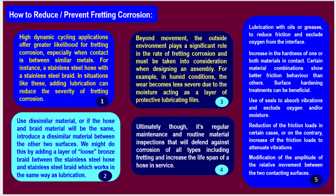Specific prevention methods include: lubrication with oils or greases to reduce friction and exclude oxygen from the interface; increasing the hardness of one or both materials in contact; selecting material combinations that show better friction behavior; surface hardening treatments; use of seals to absorb vibrations and exclude oxygen and moisture; reduction or — on the contrary — increase of friction loads to attenuate vibrations; and modification of the amplitude of relative movement between the two contacting surfaces.